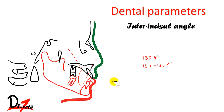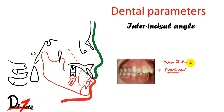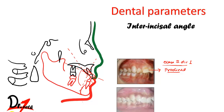The second patient is Class II division 1. In Class II division 1 the incisors are proclined. Because of this proclination, when the incisor is more proclined the inter-incisal angle will decrease. So in Class II division 1 malocclusion the inter-incisal angle also decreases.